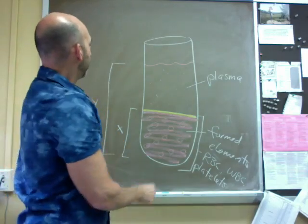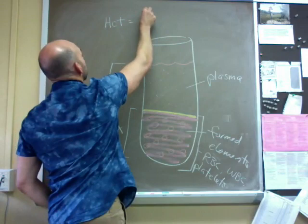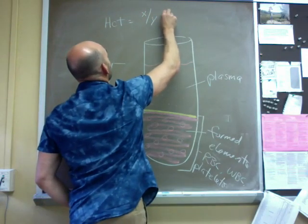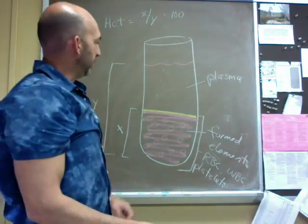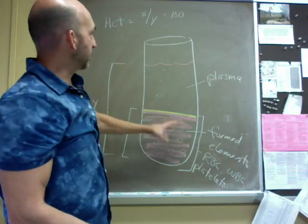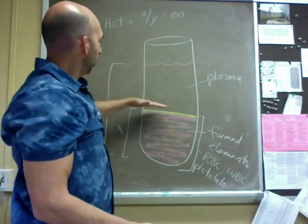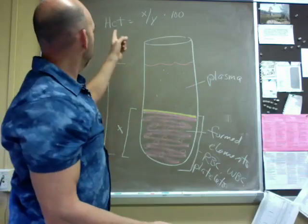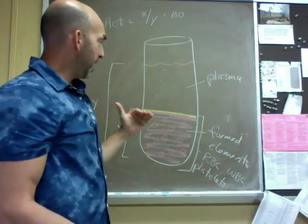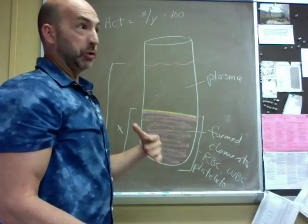Then hematocrit, abbreviated HCT, equals x over y times 100. In other words, it's the fraction of formed elements in whole blood as a percent. If it were half formed elements, your hematocrit would be 50.